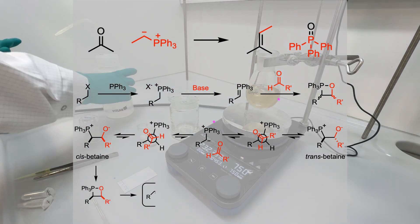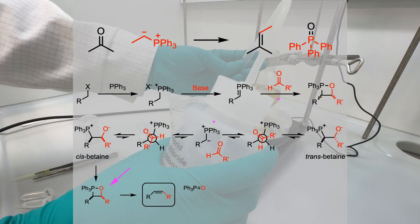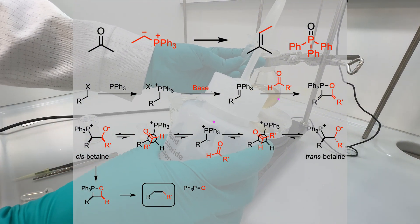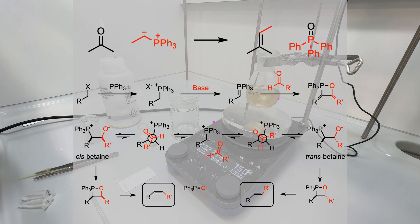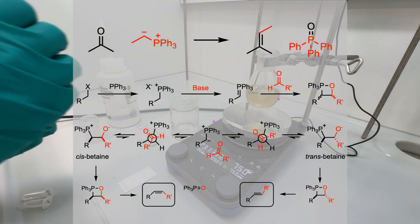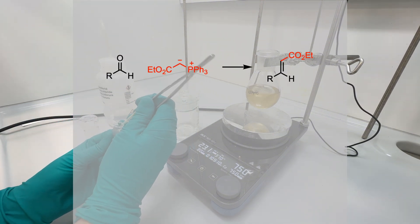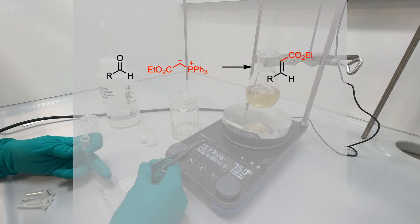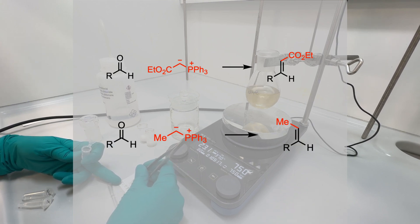The cis-betaine will lead to the Z-alkene via an oxaphosphetane intermediate, while the trans-betaine will give the E-alkene. In general terms, many factors determine the stereoselectivity of the reaction. However, as a rule of thumb, stabilised ylides tend to deliver E-alkenes, while non-stabilised ylides are prone to give Z-olefins.